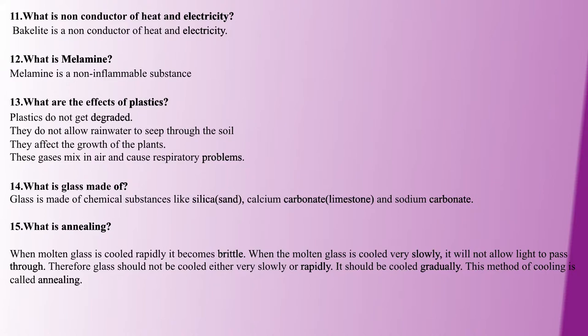Next question: What is annealing? When molten glass is rapidly cooled, it becomes a brittle substance. In annealing, the glass is cooled very slowly and gradually, allowing light to pass through properly. So annealing means heating glass and then cooling it slowly and gradually.